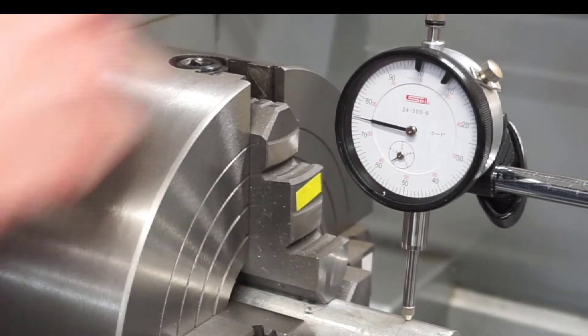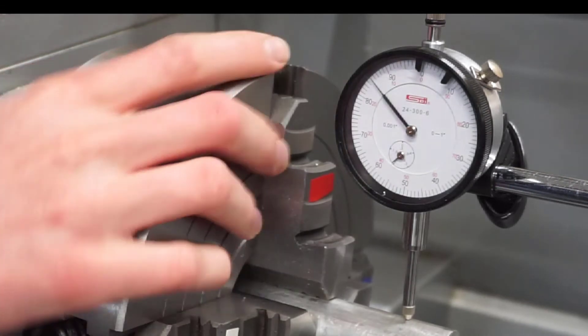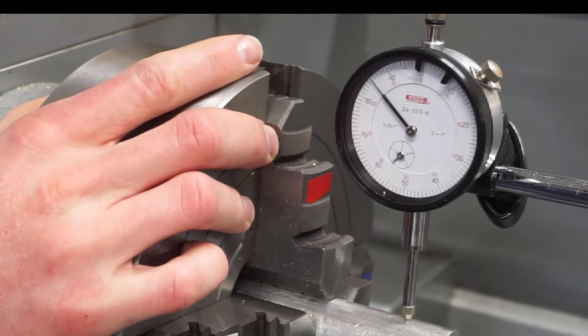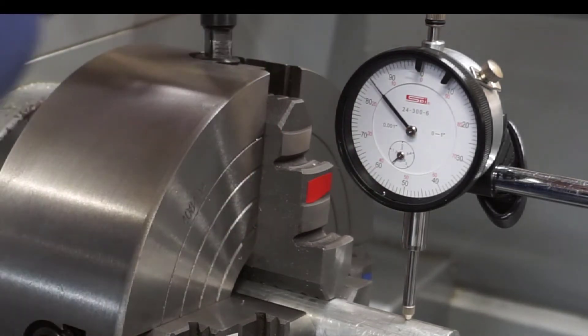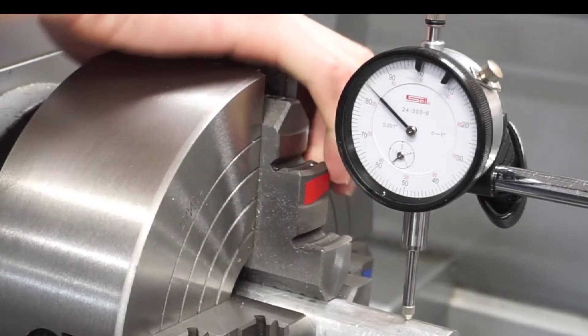Now my yellow and my red will also indicate concentric at seventy-nine-thousands if my part is round. I could choose to re-zero my gauge in this instance. I typically don't.